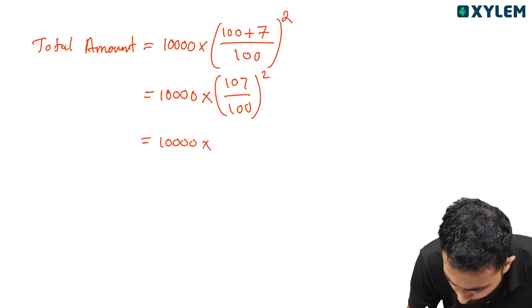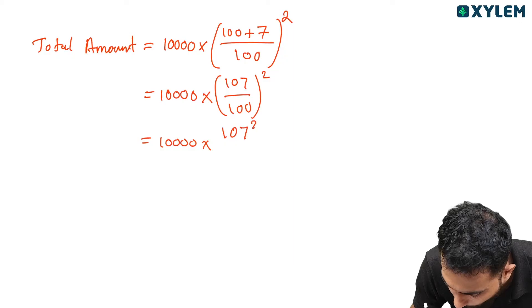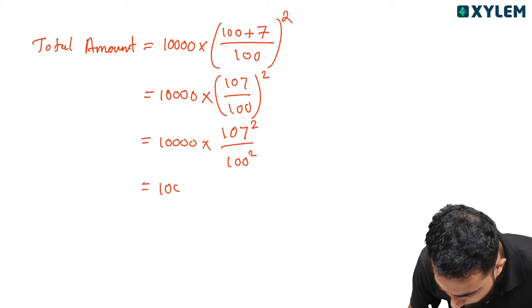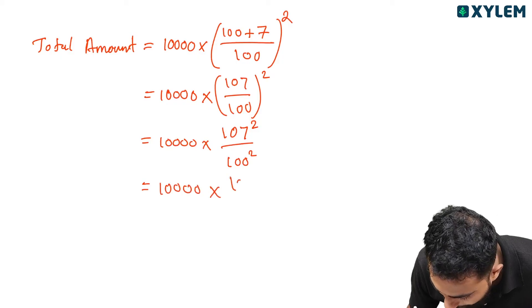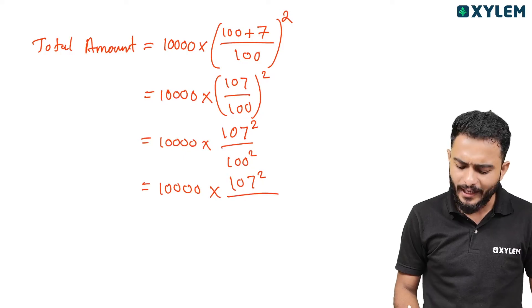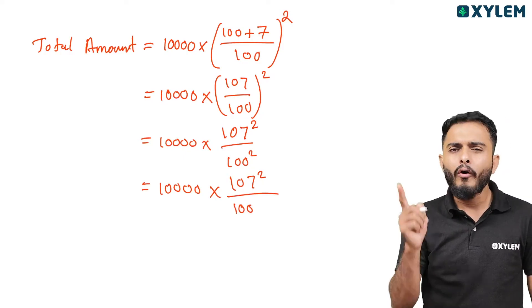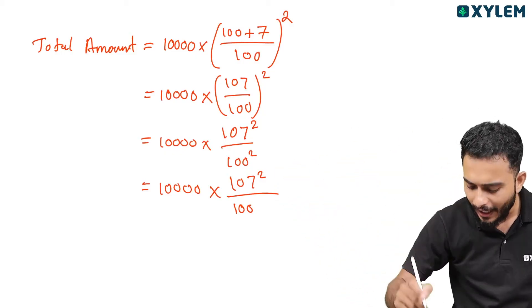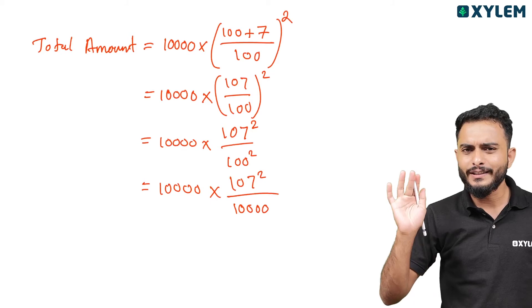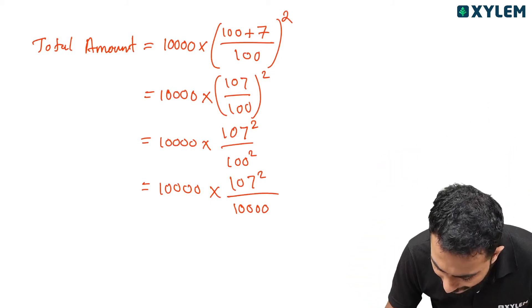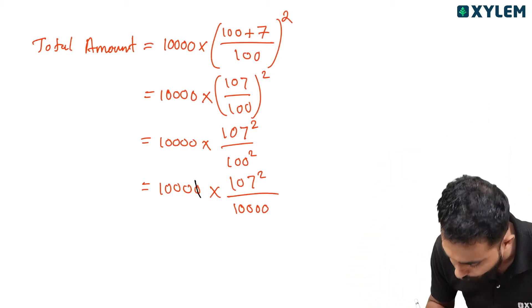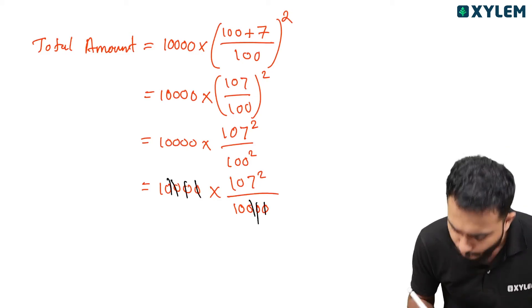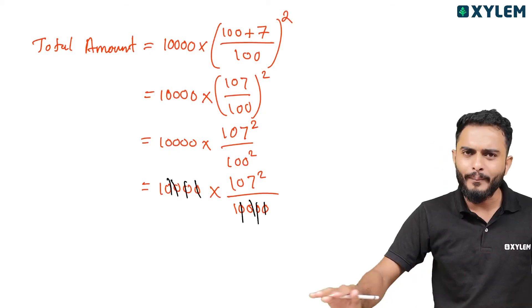This equals 10,000 × 107² divided by 100². Now 100 squared is 10,000, so we can simplify this to 107² divided by 100.